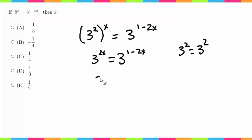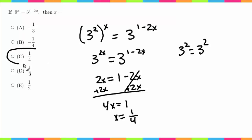So I'm going to now have 2x equals 1 minus 2x. I'm going to add 2x to both sides. I'm going to get 4x equals 1. So x equals 1 over 4, which is answer choice C.